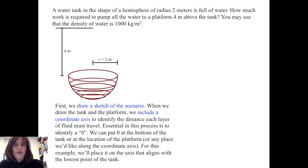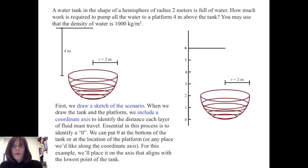First, as we've done in all the other situations we've worked with so far, we draw the situation in the scenario. When we draw the tank and the platform, we include a coordinate axis to identify the distance each layer of fluid must travel. It is essential in this process to identify a zero. We can put the zero at the bottom of the tank, at the location of the platform, or any place we'd like along the coordinate axis. For this example, we'll place the zero on the axis that aligns with the lowest point of the tank.